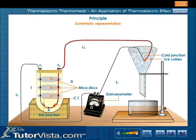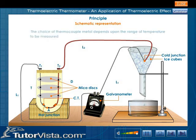The schematic representation of the experimental setup is shown here. The galvanometer connected in the circuit is calibrated to read the temperature directly. The choice of thermocouple metal depends upon the range of temperature to be measured. A copper-constantan thermocouple is generally used to measure temperature up to 1600 degrees centigrade.